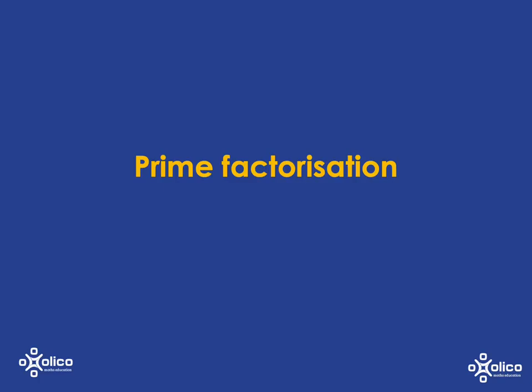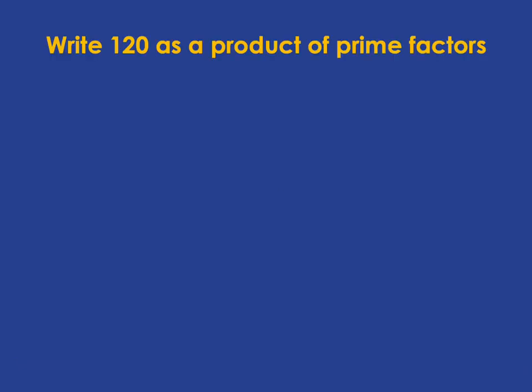We're going to have a look at prime factorization, which is a process by which we basically break a number up into products of factors until you can't break it up any further. Let me show you what I mean by an example. If you're asked to write 120 as a product of prime factors...